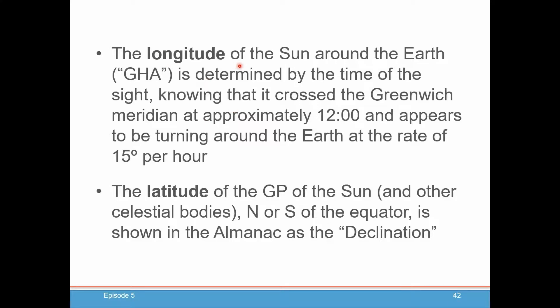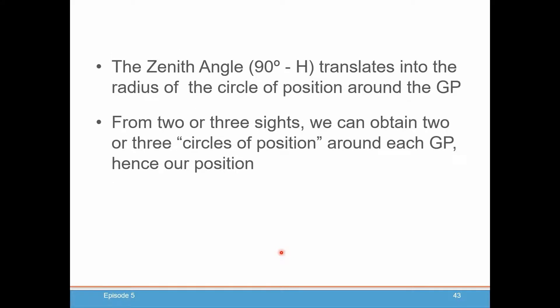So how do we do this? The longitude of the sun around the Earth, its GHA or Greenwich hour angle, is determined by the time that we take our sight. Knowing that it crosses the Greenwich meridian at approximately noon, and appears to be turning around the Earth at the rate of 15 degrees an hour, determines the longitude of the GP location. And this you find in the nautical almanac. Same with the latitude of the GP of the sun or other celestial body, called declination, and that is how far north or south it is of the equator. The zenith angle is 90 minus your altitude that you measure with your sextant, and that translates into the radius of that circle of position around the GP.